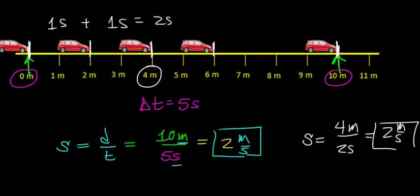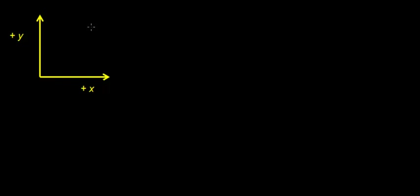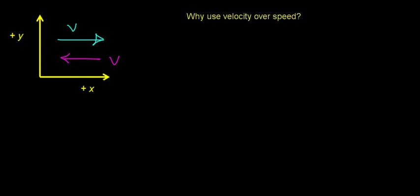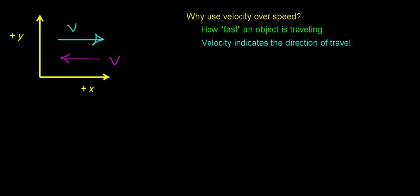In everyday language, speed is a useful concept for describing how fast you traveled. But in physics, there's a more useful quantity called velocity. In this video we'll consider motion in just the x direction, so an object can move with positive velocity in the positive x direction or negative velocity in the negative x direction. Velocity tells us not only how fast something is traveling but in what direction — giving more information about the object's motion.